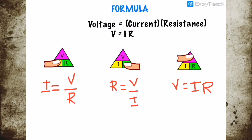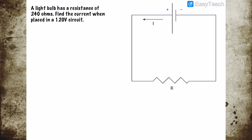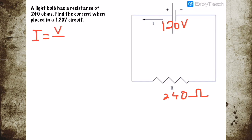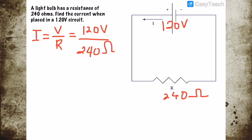Example one: a light bulb has a resistance of 240 ohms. Find the current when placed in a 120-volt circuit. Using the formula I equals V over R, our voltage is 120 volts divided by the resistance of 240 ohms. Therefore the current flow is 0.5 amperes.